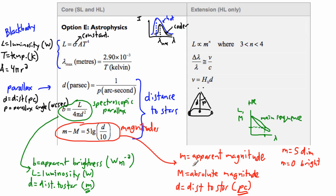This magnitude method can be confusing, especially since the log is written as LG rather than LOG, but it just indicates a logarithmic scale. Both the spectroscopic parallax and magnitude methods use the same underlying physics, just different scales. Apparent brightness and apparent magnitude are both easy to measure on Earth, while luminosity and absolute magnitude describe intrinsic star properties. That's everything for the standard level portion of option E, astrophysics.